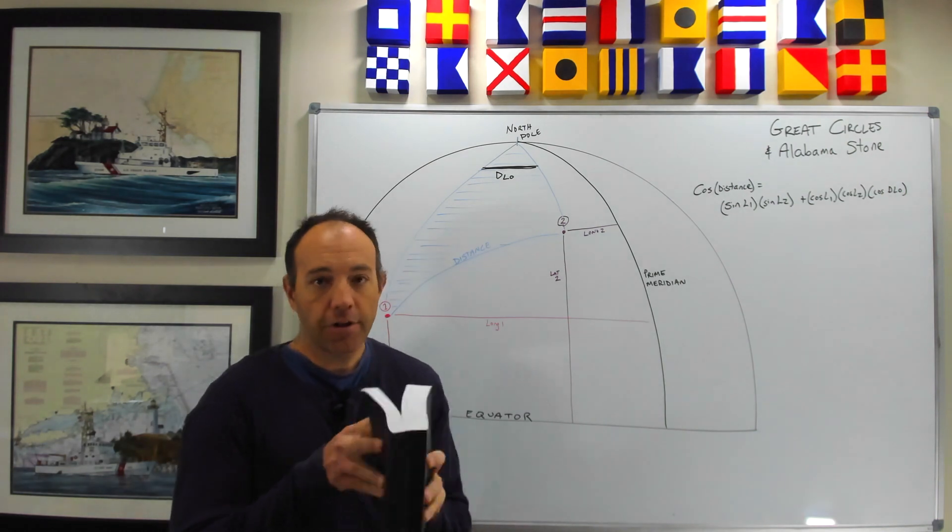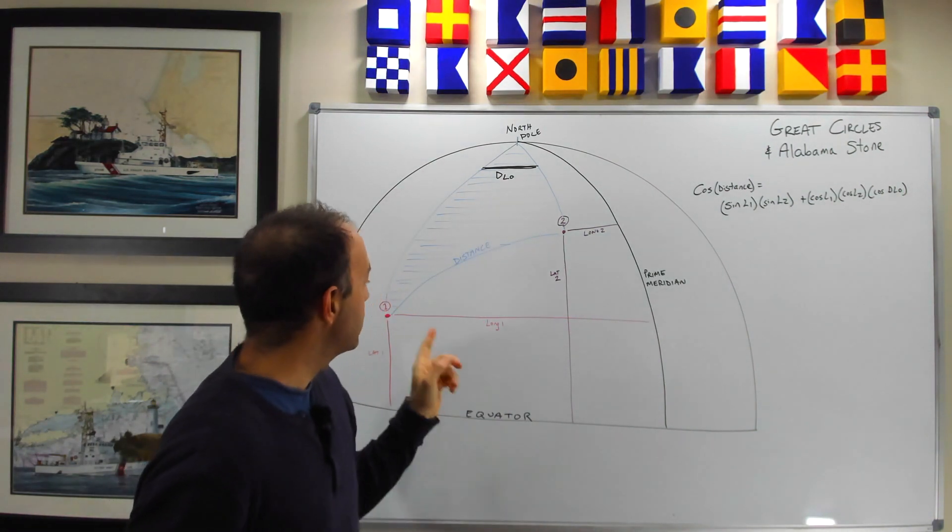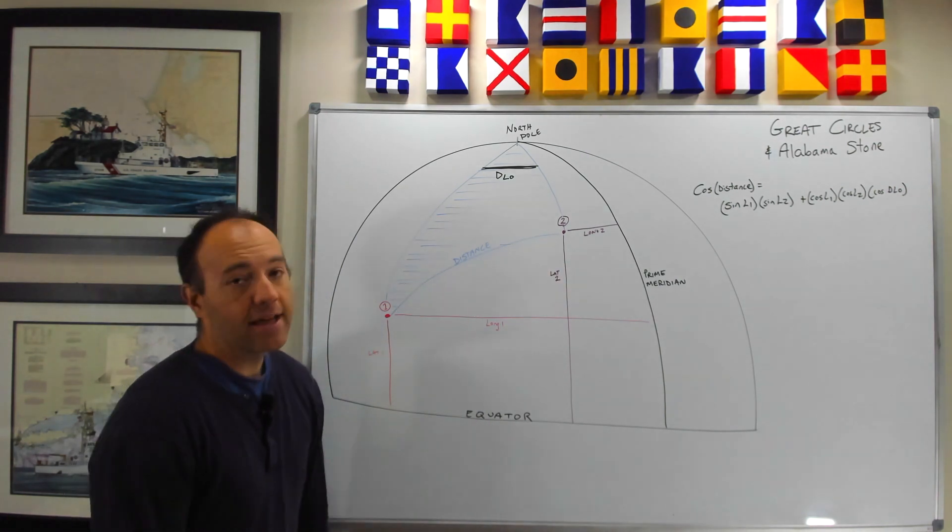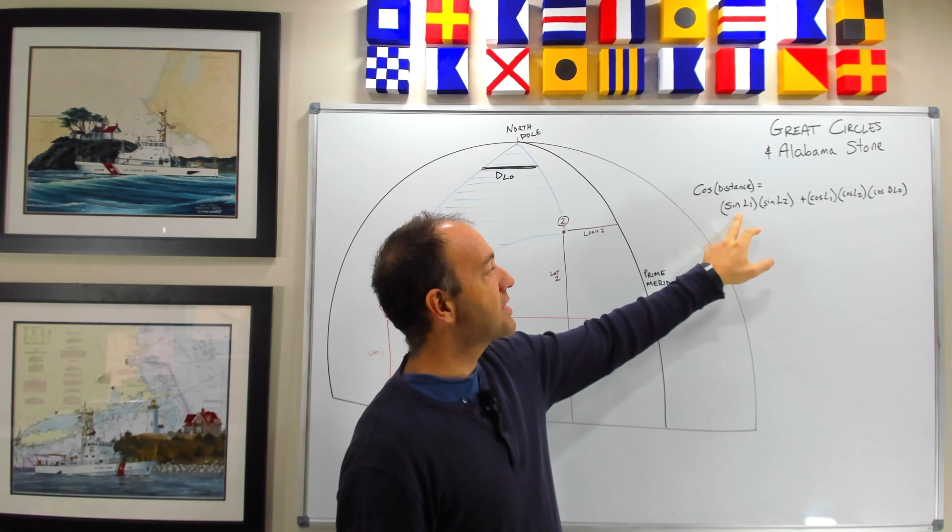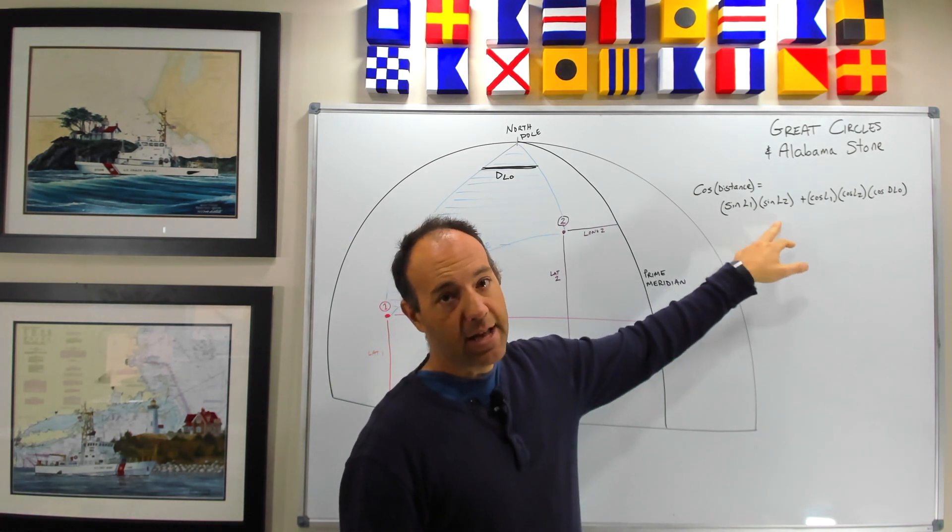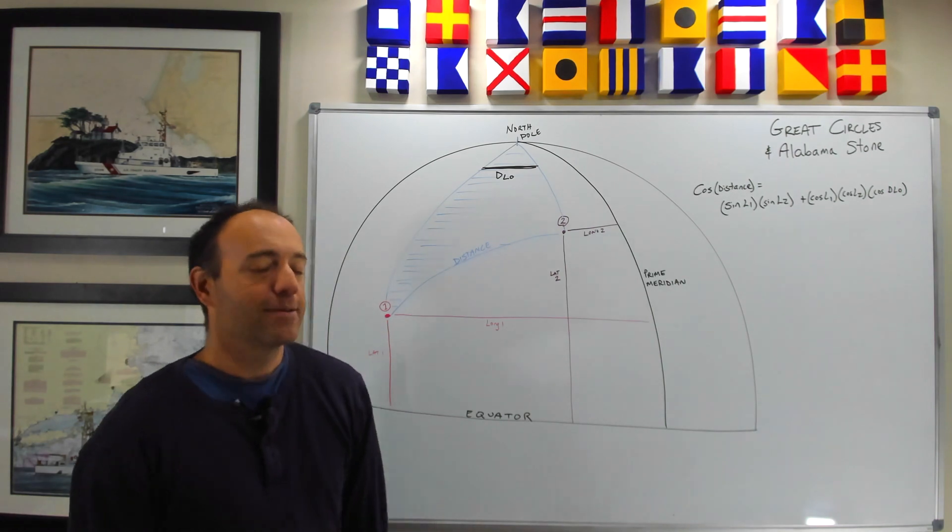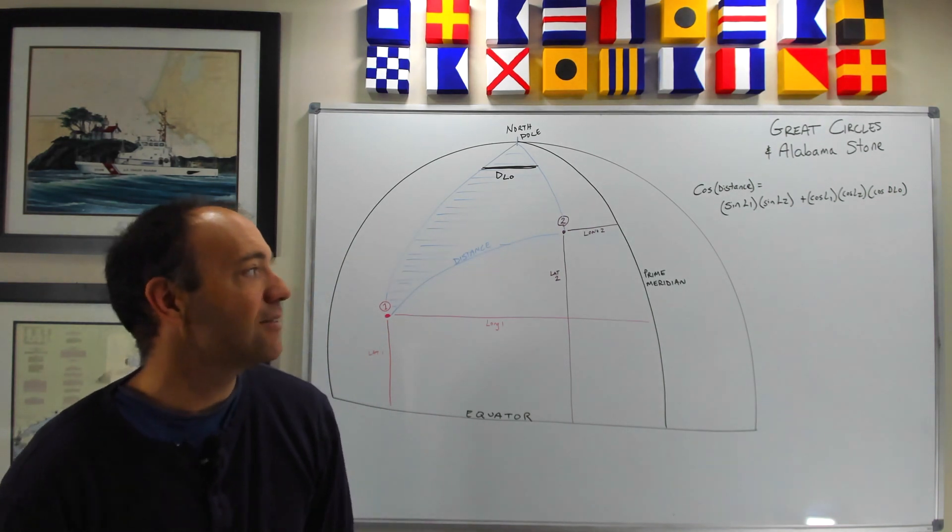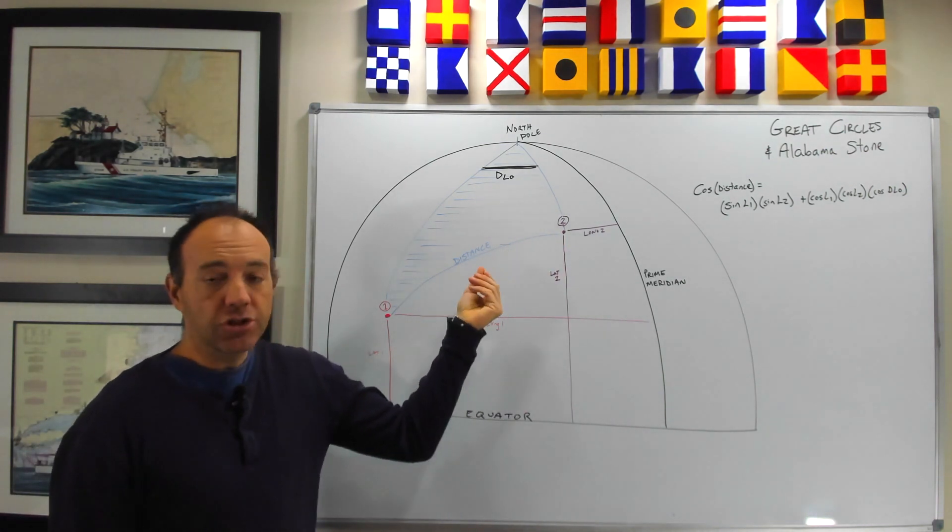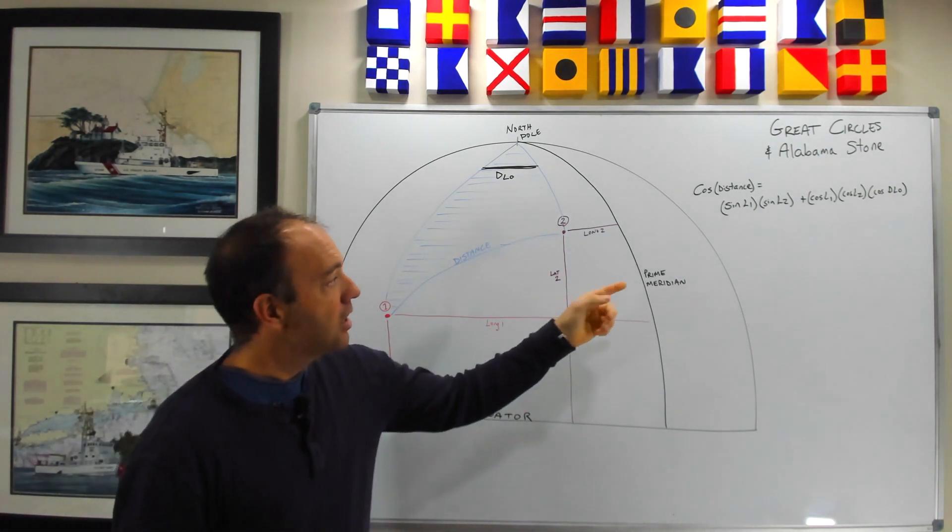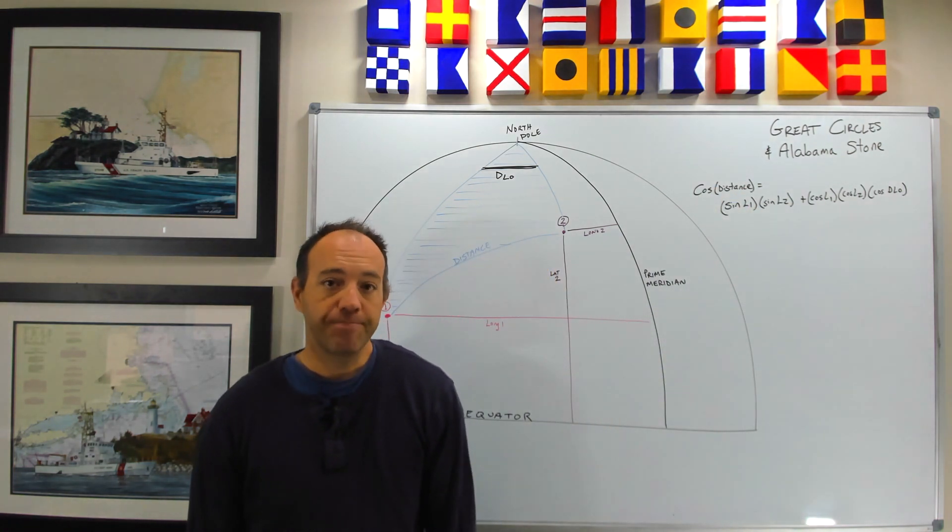And then in Bowditch, volume 2, there's a formula to calculate the distance between any two points using that information. The formula is the cosine of distance equals the sine of the first latitude times the sine of the second latitude, plus the cosine of the first latitude times the cosine of the second latitude times the cosine of the difference in longitude. So if you know the two positions, you can deduce the difference in longitude, plug these values in, and you can get your distance that way.